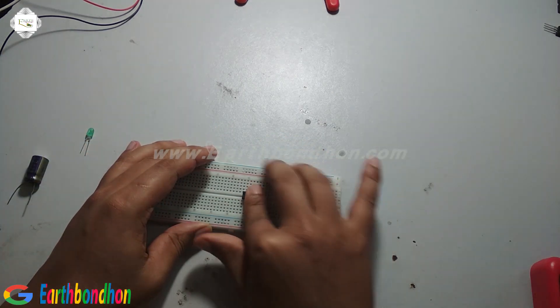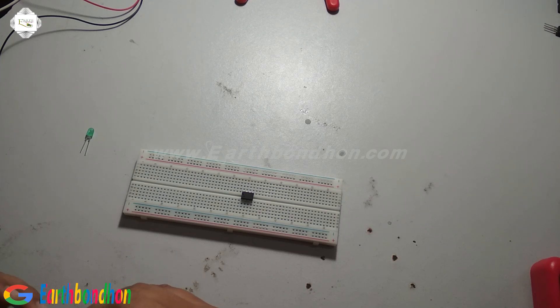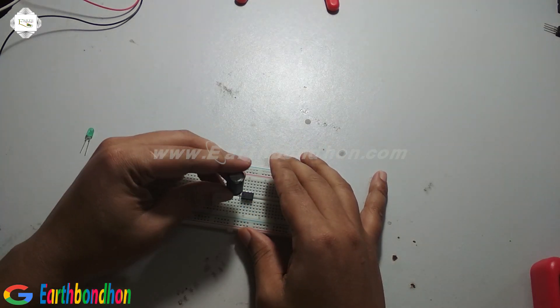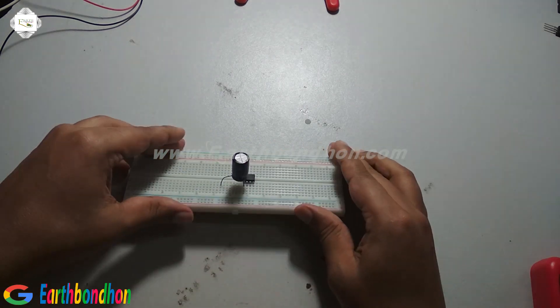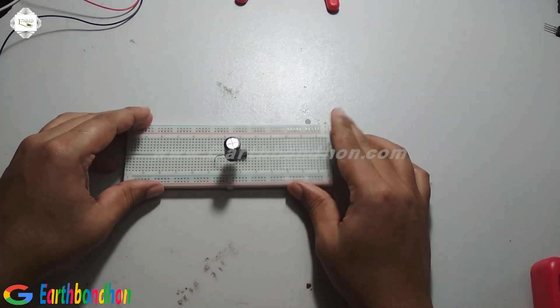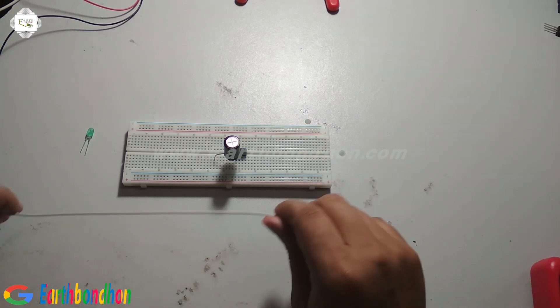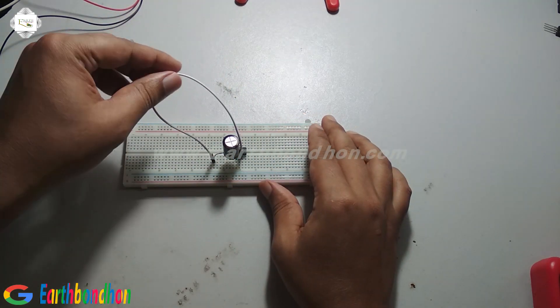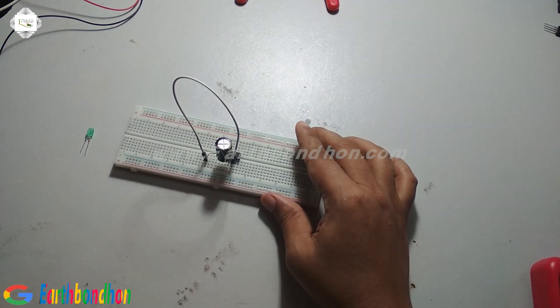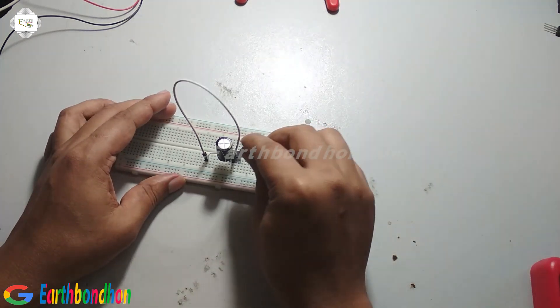First, we'll connect the capacitor. The capacitor is connected to IC pin number 1 and pin number 2. Another point: pin number 3 has a resistor.